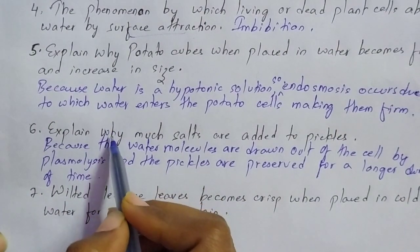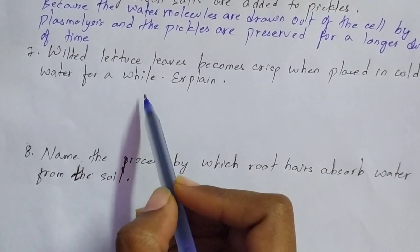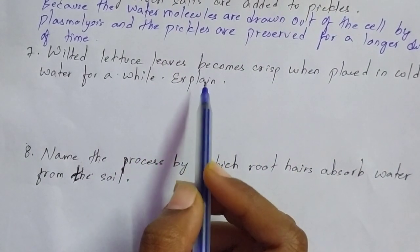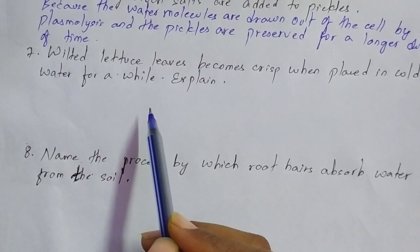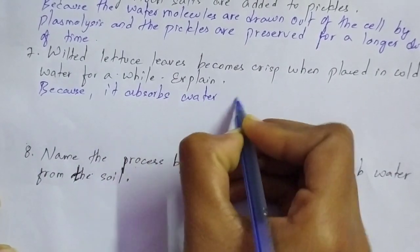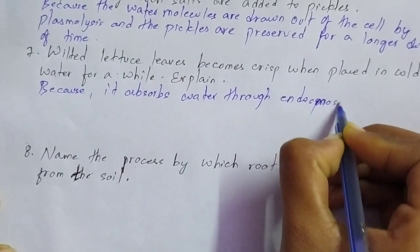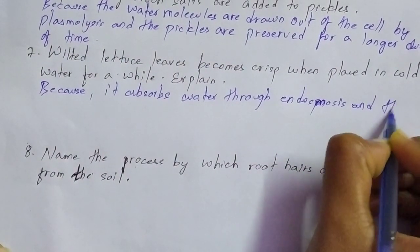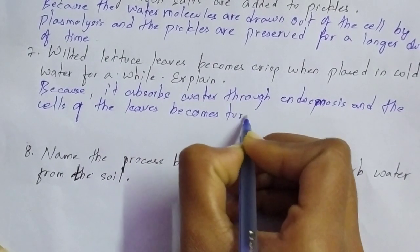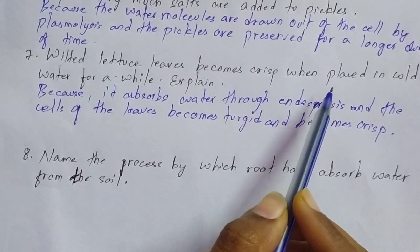This is also most of the time asked in your board examination from Absorption by Roots. Moving on to question number seven, which is again a 'give reason' type. The question is: wilted lettuce leaves become crisp when placed in cold water for a while — explain the reason. Wilted lettuce leaves become crisp when placed in cold water because they absorb water; endosmosis occurs, the cells of the leaves become turgid, and the leaves become crisp.